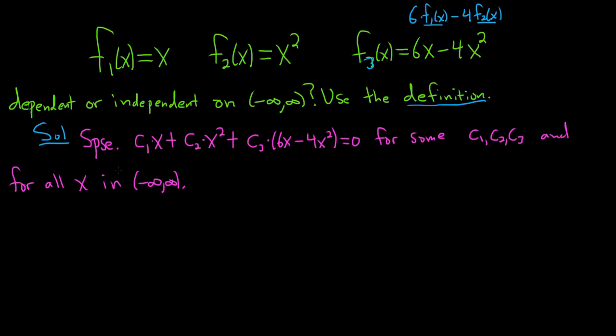So you always start these problems by assuming you have a linear combination. And then don't forget to say, you know, for some c1, c2, c3. And for all x, right, it's for all x.